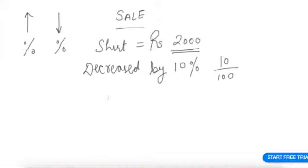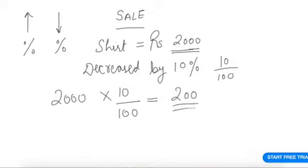Now what is 10%? 10/100. The price is decreased - what is the price of the shirt initially? Rs 2000. It's decreased by how much? 10%. So 10/100 times 2000. If we calculate this, it comes to Rs 200.